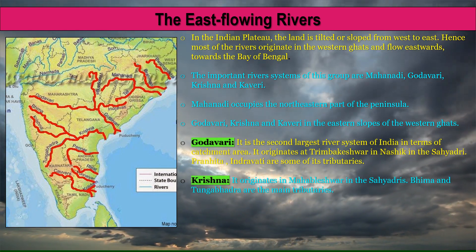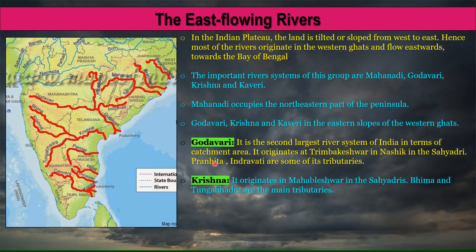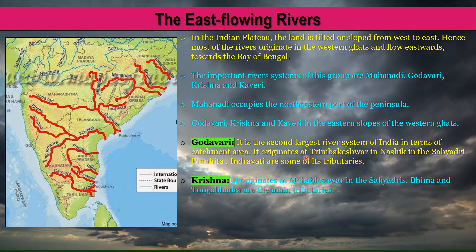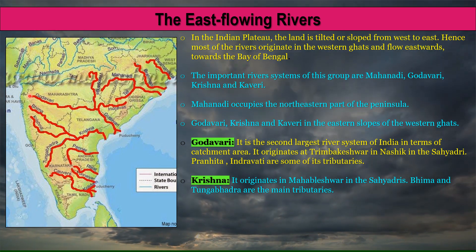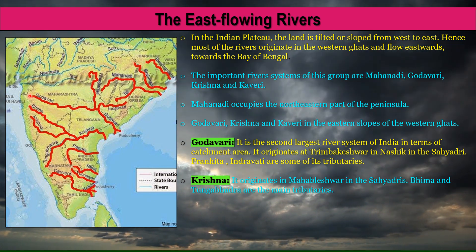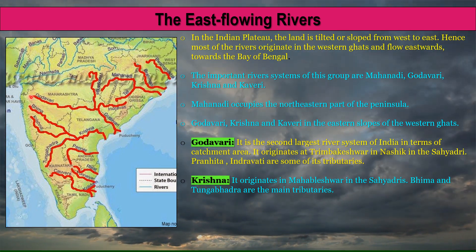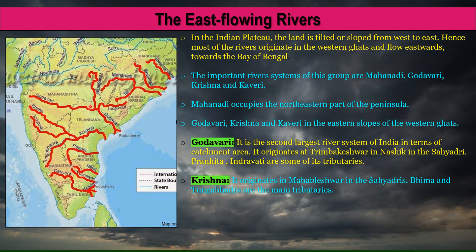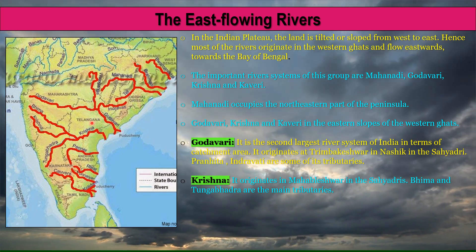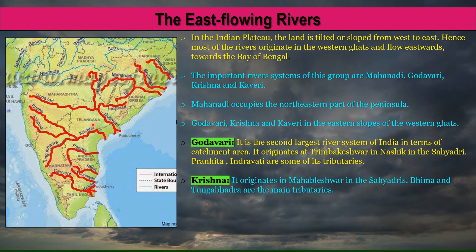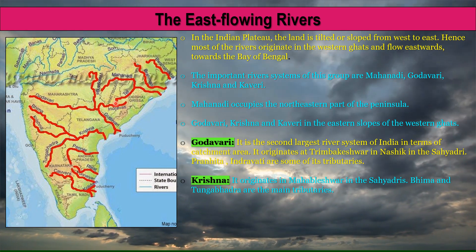The Godavari river is the second largest river system of India in terms of catchment area. It originates at Trambakeshwar in Nashik in the Sayadri range of the Western Ghats. River Pranahita is the only river that flows southward in the peninsular region, and river Pranahita and Indravati are some of its major tributaries.